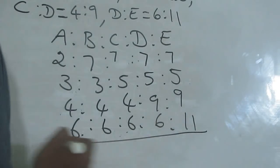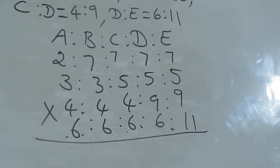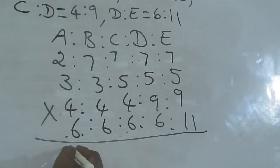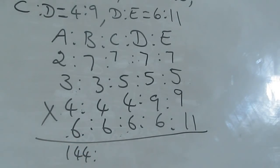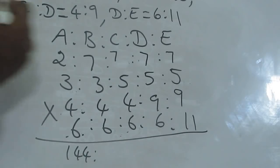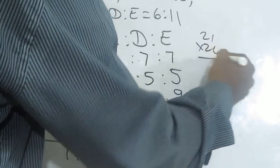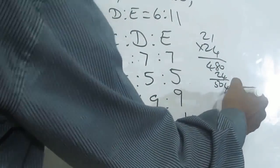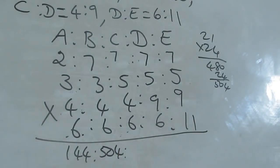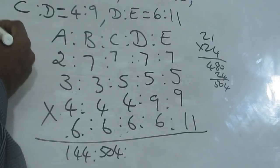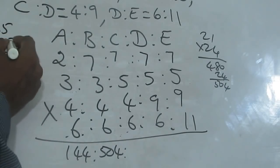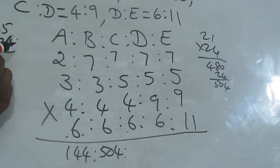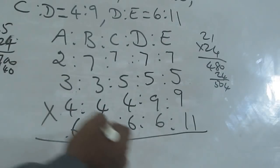The next step is just multiplication. 2 into 3 is 6, 6 into 4 is 24, 24 into 6 is 144. 7 into 3 is 21, 21 into 4 is 84 — wait, 21 into 24: 24 into 20 is 480, plus 24, gives 504. Next: 35 into 24. 35 into 20 is 700, 35 into 4 is 140, so that is 840.